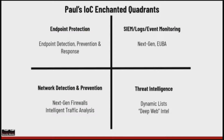I always like to bring in Paul's indicator of compromise enchanted quadrants because sometimes we focus on a specific quadrant. In this particular webcast, really all four quadrants are going to be in play. We're definitely going to talk about the network side of the house, threat intelligence aspects, endpoint to pull some information off the endpoint itself, and potentially some log correlation. Threat hunting really spans all these different quadrants if you're doing it holistically.